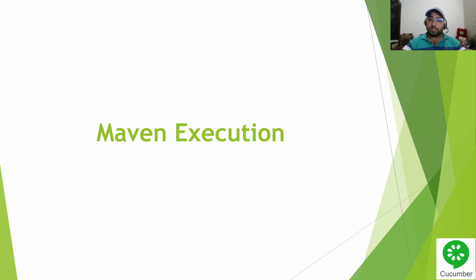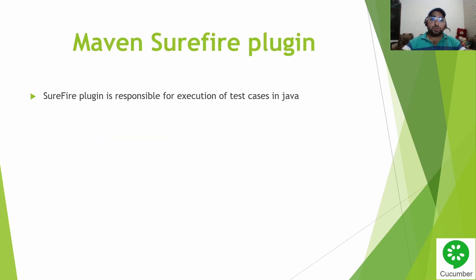This is useful when you want to execute your test cases in the pipeline. When we want to execute locally, you can also utilize Maven execution, but generally when we execute test cases locally we run through the Cucumber runner. For pipeline purposes, we generally need to run our test cases using Maven if we are using Maven as a build tool, and if we are using Gradle then we need to utilize Gradle.